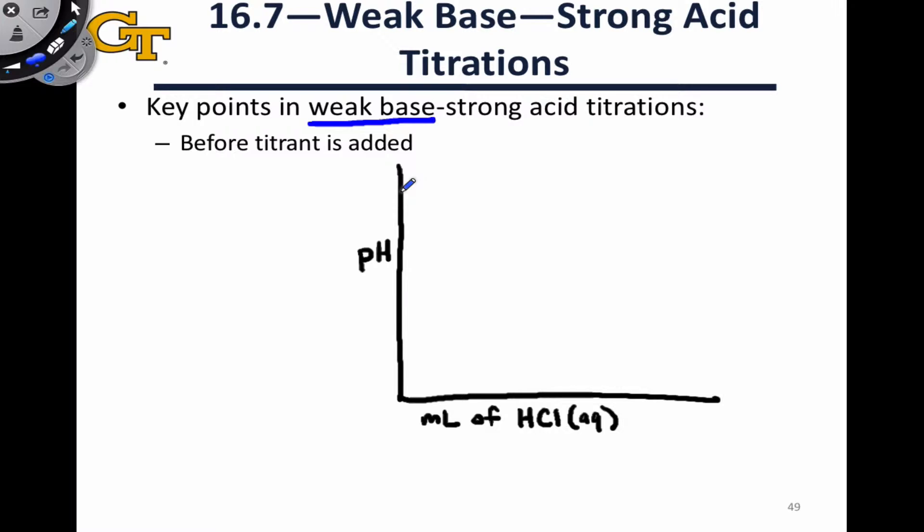The first point to focus on is before any titrant is added at all, and for a weak base at this point we'll have a pH greater than seven. So I'm going to go ahead and mark seven on this graph because we're going to need this point later, but for a weak base our initial pH is going to be greater than seven.